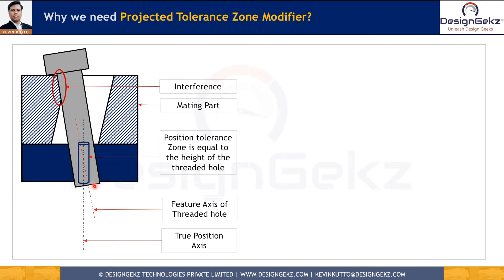As you can see, this hole orientation is going to decide the orientation of the bolt. As the height of the upper part increases — that means as the height of the bolt increases — this orientation of the hole will exaggerate into the bolt. The more the height of the upper part, the more orientation we are going to get for the bolt, for the same tolerance of position or same tolerance of perpendicularity.